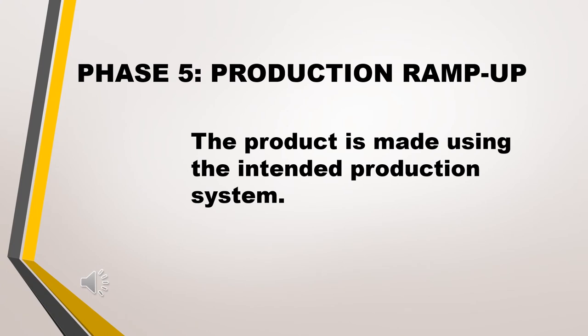The last phase is Phase 5, production ramp-up. The product is made using the intended production system. The purpose of ramp-up is to train the workforce and to work out any remaining problems in the production process. Products produced during production ramp-up are sometimes supplied to preferred customers and are carefully evaluated to identify remaining flaws.